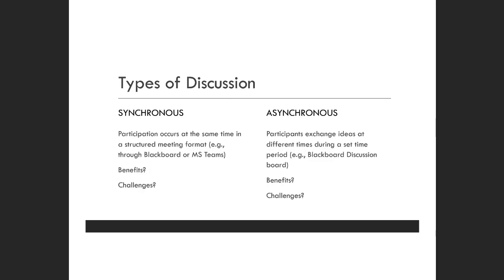There are two main types of discussion. The first is synchronous, where participation occurs at the same time in a structured meeting format — what we're doing right now is a synchronous meeting. Asynchronous, on the other hand, is when participants can exchange ideas at different times or during a set time period. For example, you have to post on the Blackboard discussion board between Tuesday and Thursday — a set time, but students are able to do it on their own schedule. Does anybody see any benefits or challenges related to asynchronous or synchronous discussions?